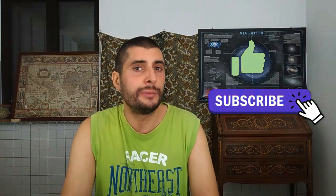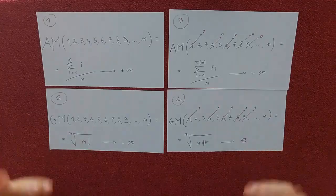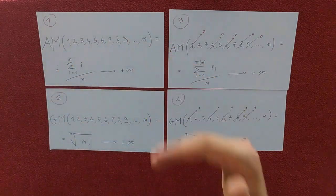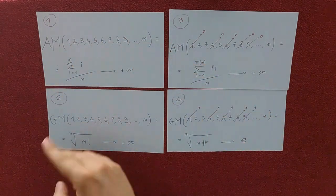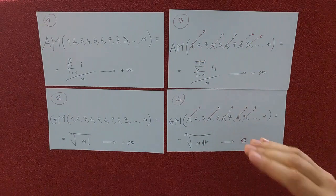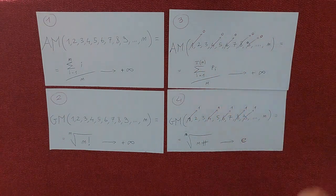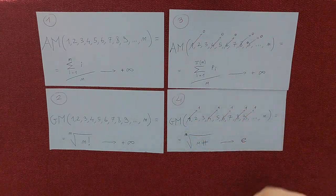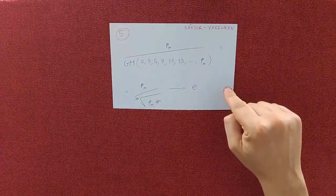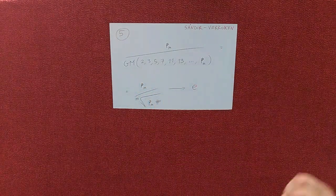And subscribe to my channel. Remember, the videos in English have an E in the title. We want to prove these things: the arithmetic mean of all natural numbers is infinite; the geometric mean of all natural numbers is infinite; the arithmetic mean of all natural numbers substituting every composite number with zero is infinite; the geometric mean of all natural numbers substituting every composite number with one is E. There is a bonus: the nth prime divided by the geometric mean of the prime numbers is E.